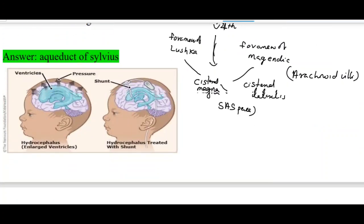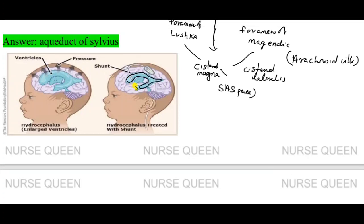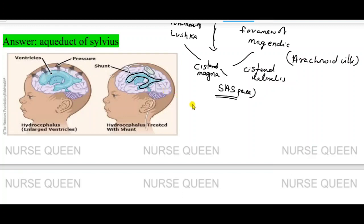Hydrocephalus occurs due to increased production, decreased absorption, or obstruction of the flow of CSF in the ventricles. One cause is obstruction in the arachnoid space. Another cause is head injury or infection of the arachnoid space, leading to reduced absorption.